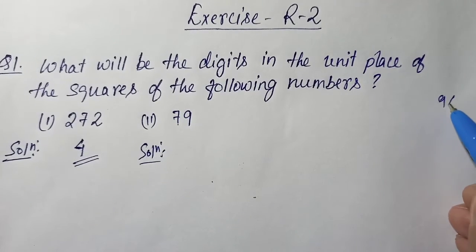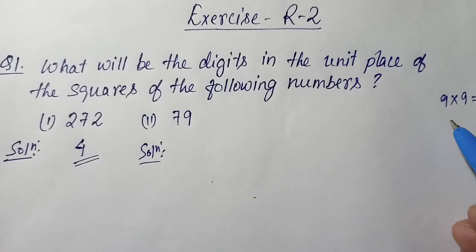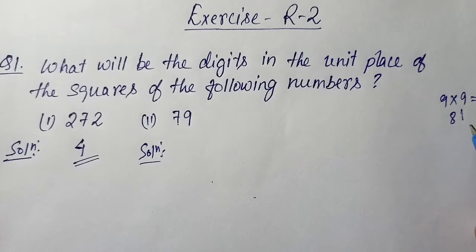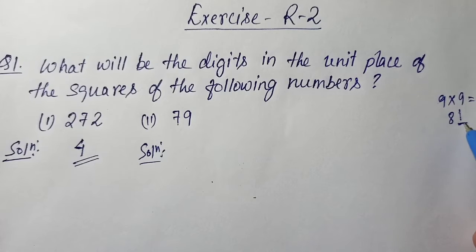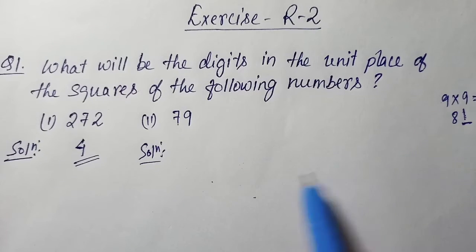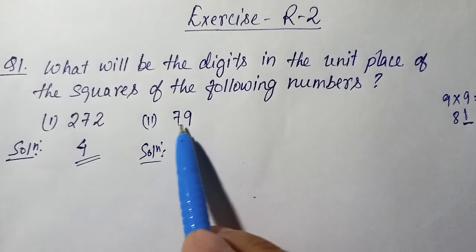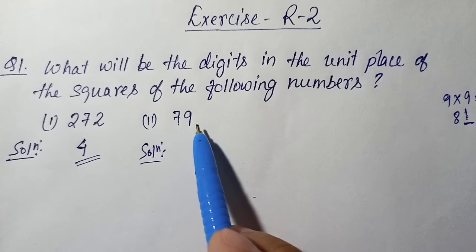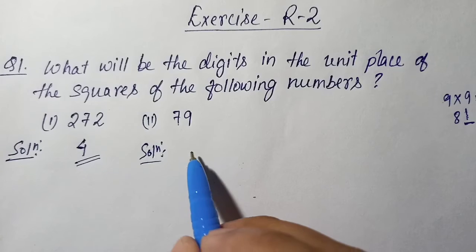Number 2: the number is 79. In 79 the unit digit is 9. If you make a square, you get 9 into 9 = 81. In 81 the unit digit is 1, so if you make a square of this number, in the unit digit we will get 1.